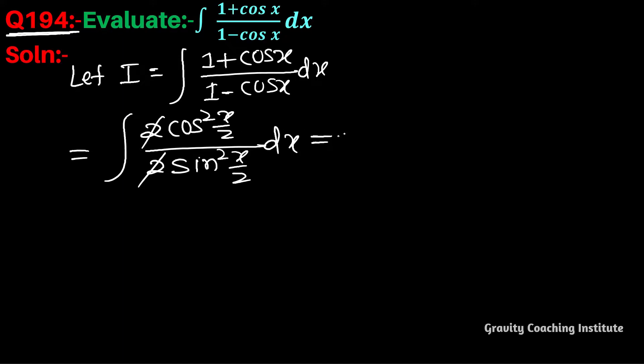The 2s cancel out, giving us the integration of cos/sin, which is cot²(x/2).